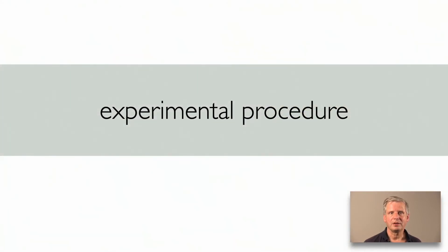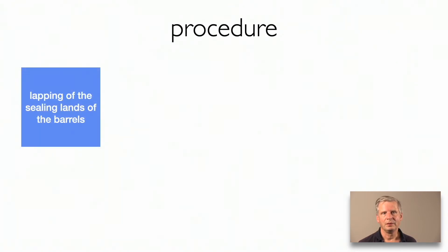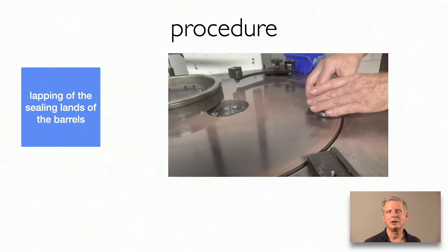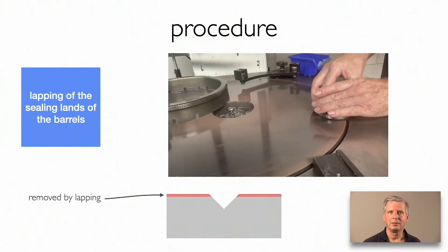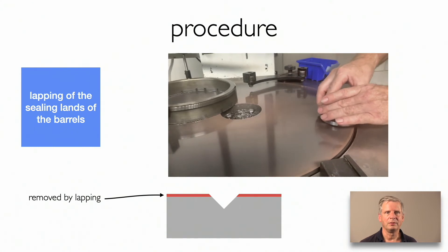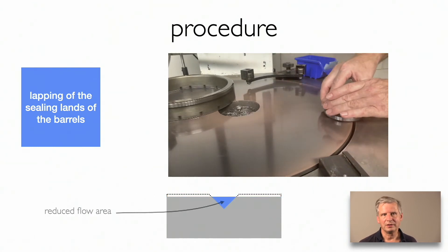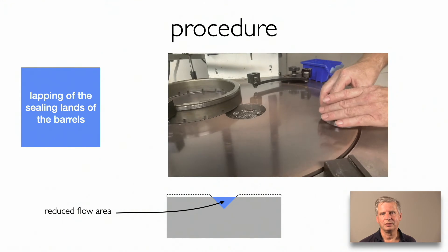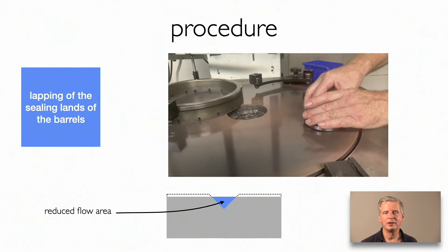Before showing the results, I need to explain the experimental procedure. The first step is lapping of the sealing lands of the barrel. By lapping, we can control the width and depth of the groove and therefore the flow area and flow resistance of the groove. We start with a large groove size and then reduce it step by step by means of lapping. Each lapping step removes about 5 to 10 micron of the obvious surface.